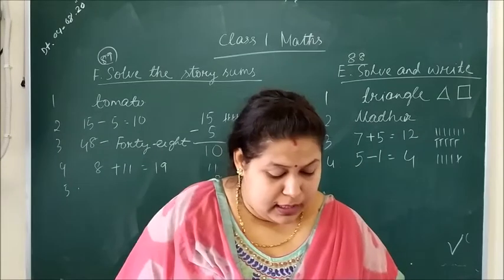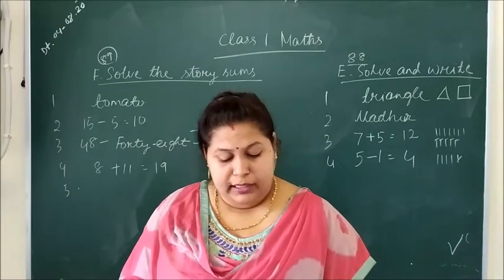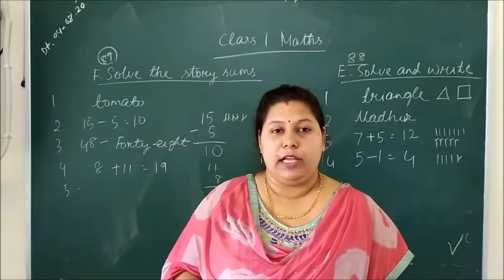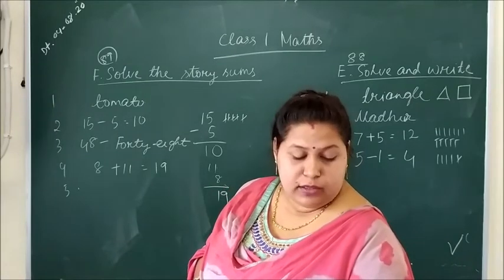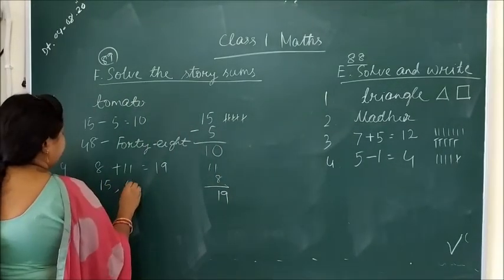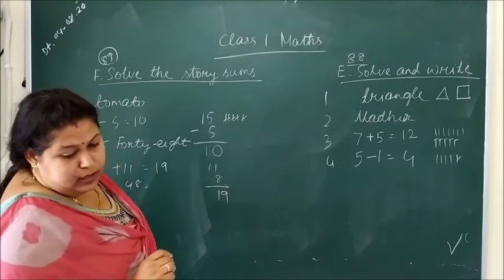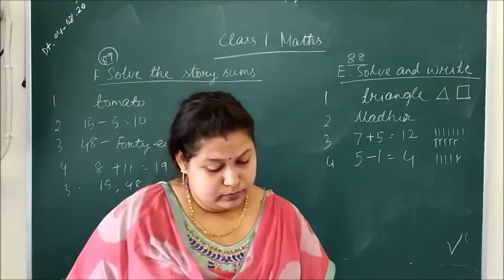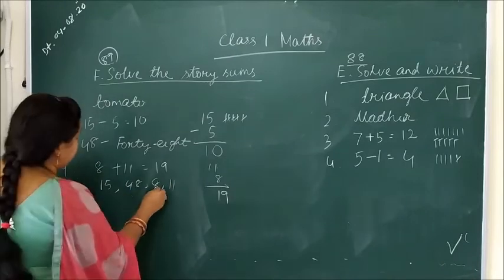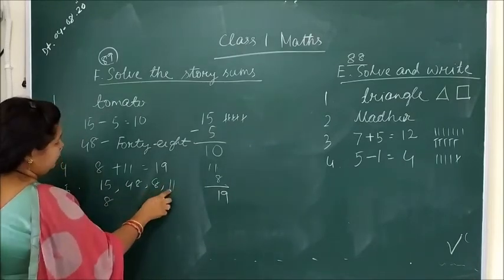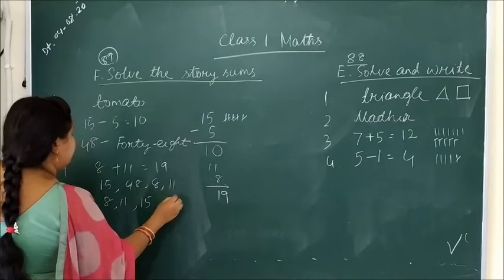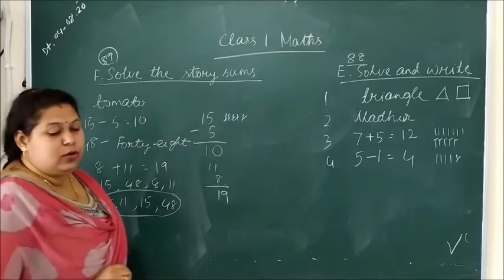Question number 5. There are 15 carrots, 48 tomatoes, 8 cabbages and 11 cauliflowers. Arrange the number of vegetables from the smallest to the biggest. So we have 15, then 48. After that we have 8 and 11. So which is the smallest? 8 is the smallest. So first 8 will come. This is smallest to the biggest.